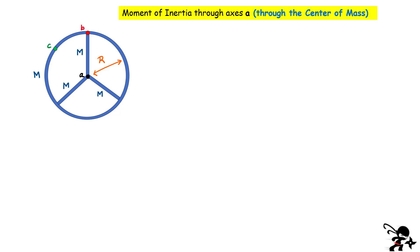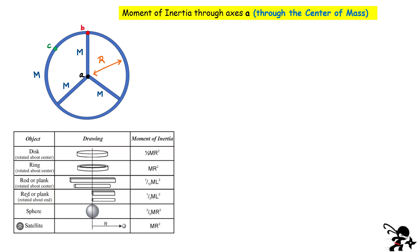We're first going to consider the moment of inertia through axis A — that is through the center, right in the center of those three spokes and in the center of the hoop. We're going to look up the values of the moment of inertia of different objects. In your textbook, you should find a table with different objects: disks, rings, rods, spheres, or point masses. These moment of inertias are typically through the center of each object, though sometimes they also give the moment of inertia through the end.